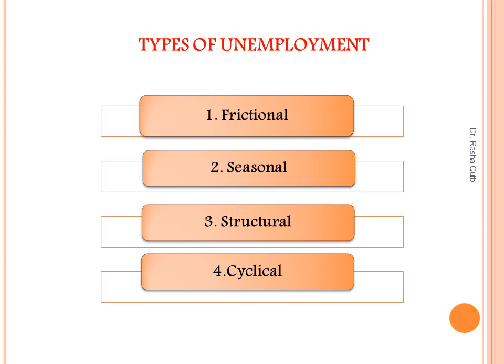The third type is structural unemployment. It is due to a mismatch between labor qualifications and job requirements — for example, when an employee is qualified as a doctor but the available job requires an engineer. This mismatch makes the person unemployed. The last type is cyclical unemployment, which exists when people search for a job but cannot find any, because the economy is in a recession.